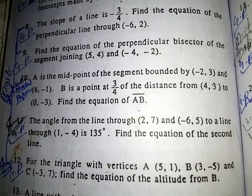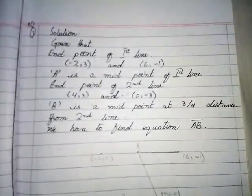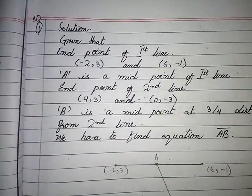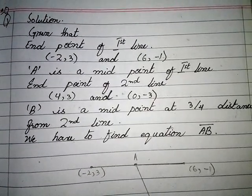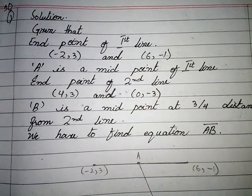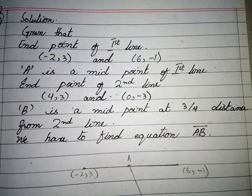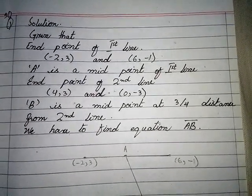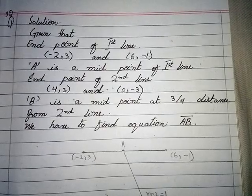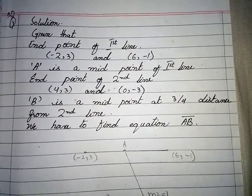Solution: the endpoints of the first line are (-2, 3) and (6, -1). A is the midpoint of the first line. The endpoints of the second line are (4, 3) and (0, -3). B is the midpoint at 3/4 distance from the second line.